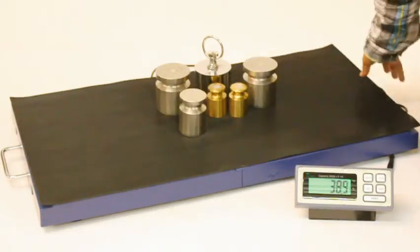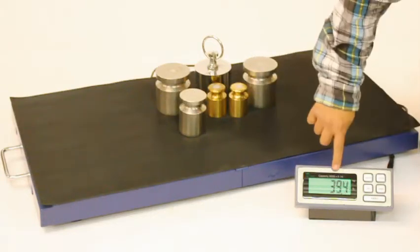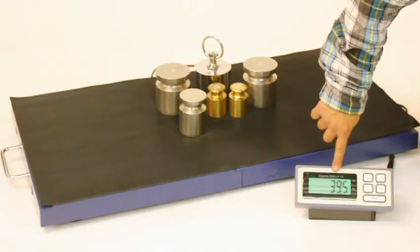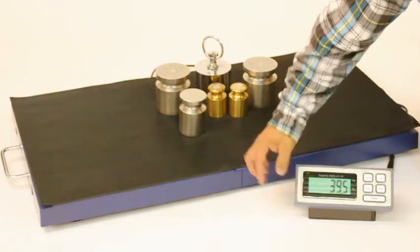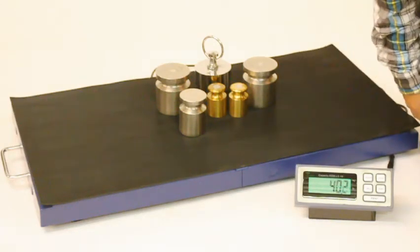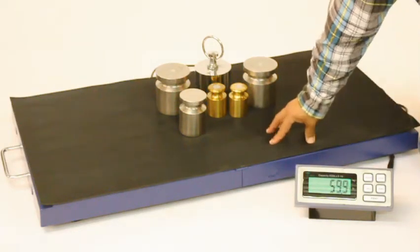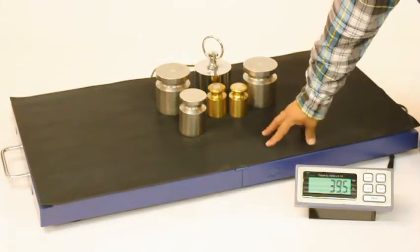The capacity of the scale is 400lb by 0.1lb. It has a very large 1-inch LCD backlight display and a high-speed 21-bit AD with a settling time of approximately 2 seconds.